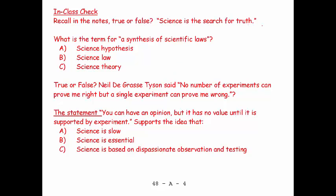Recalling the notes. True or false? Science is a search for truth. Yeah, that's true, very true. Which is the term for a synthesis of scientific laws? Well, that would be a theory. True or false? Neil deGrasse Tyson said, no number of experiments can prove me right, but a single experiment can prove me wrong. The statement is correct, but it wasn't Neil deGrasse Tyson, it was Albert Einstein. You can have an opinion, but it has no value until it is supported by experiment. Science is slow is correct, but that statement doesn't support the idea. Science is essential is correct, but that statement doesn't support the idea. That statement supports the idea that science is based upon dispassionate observation and testing. That's the best response.